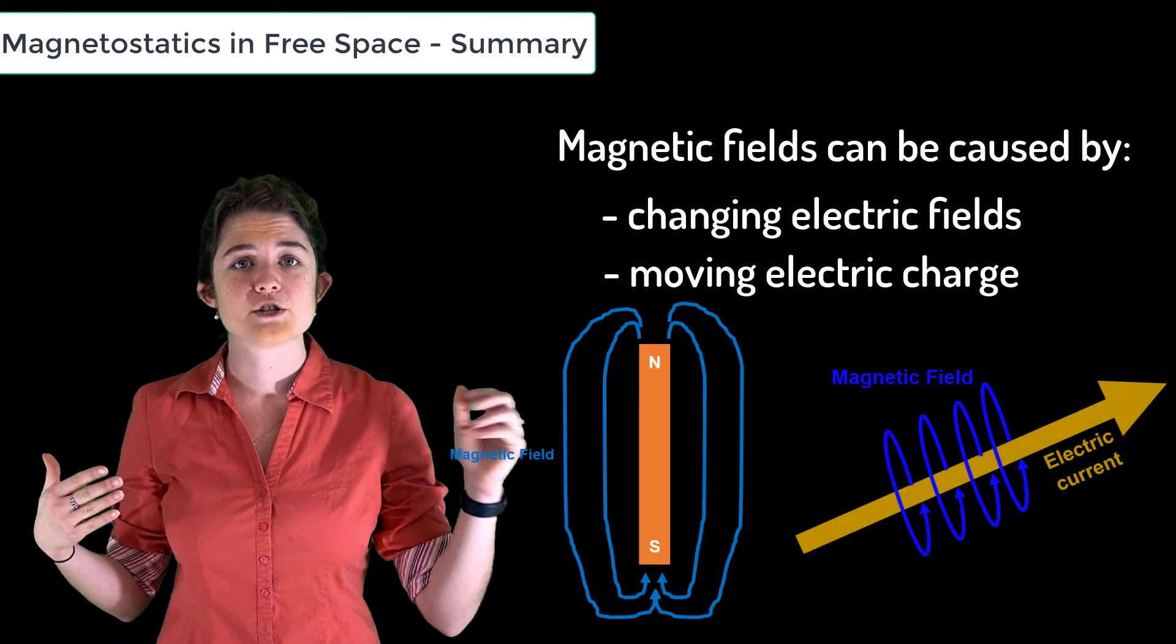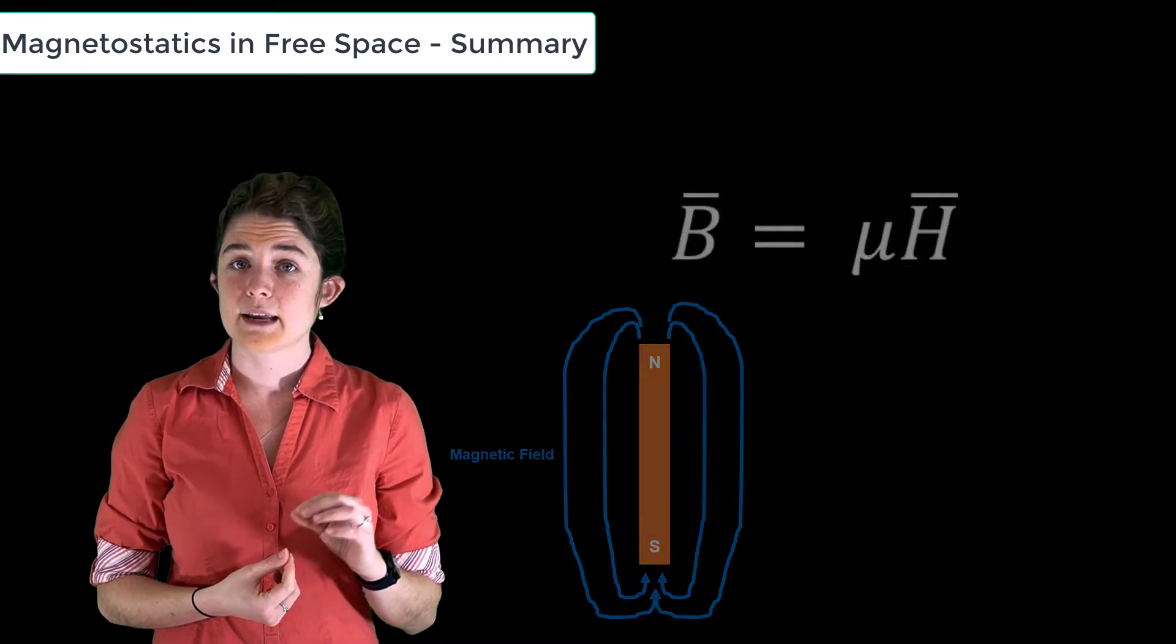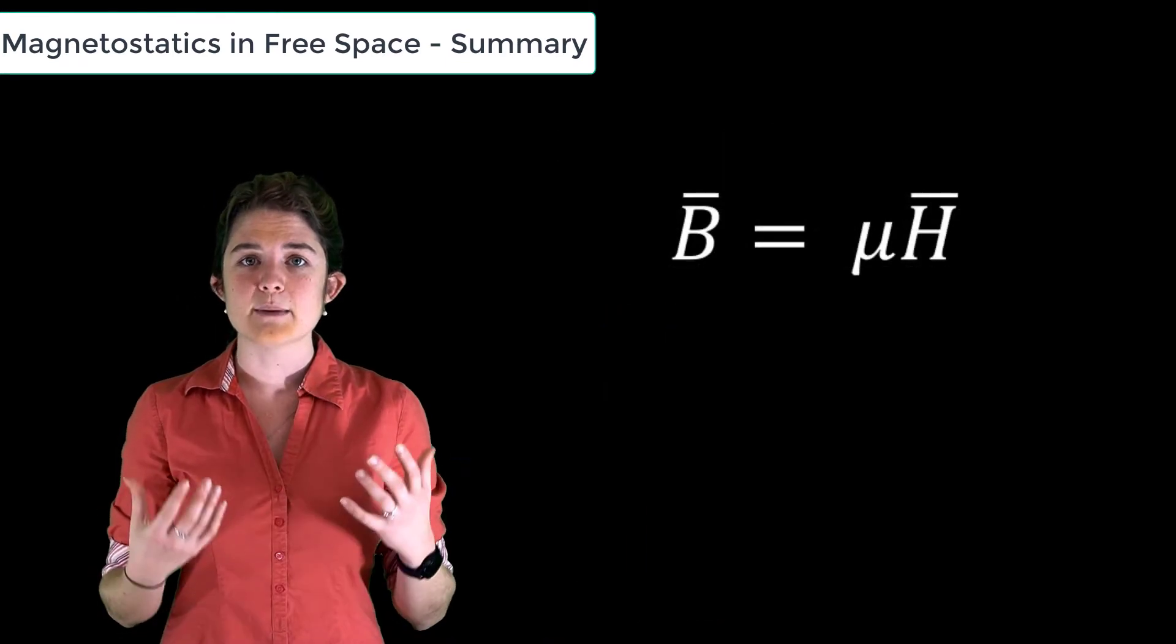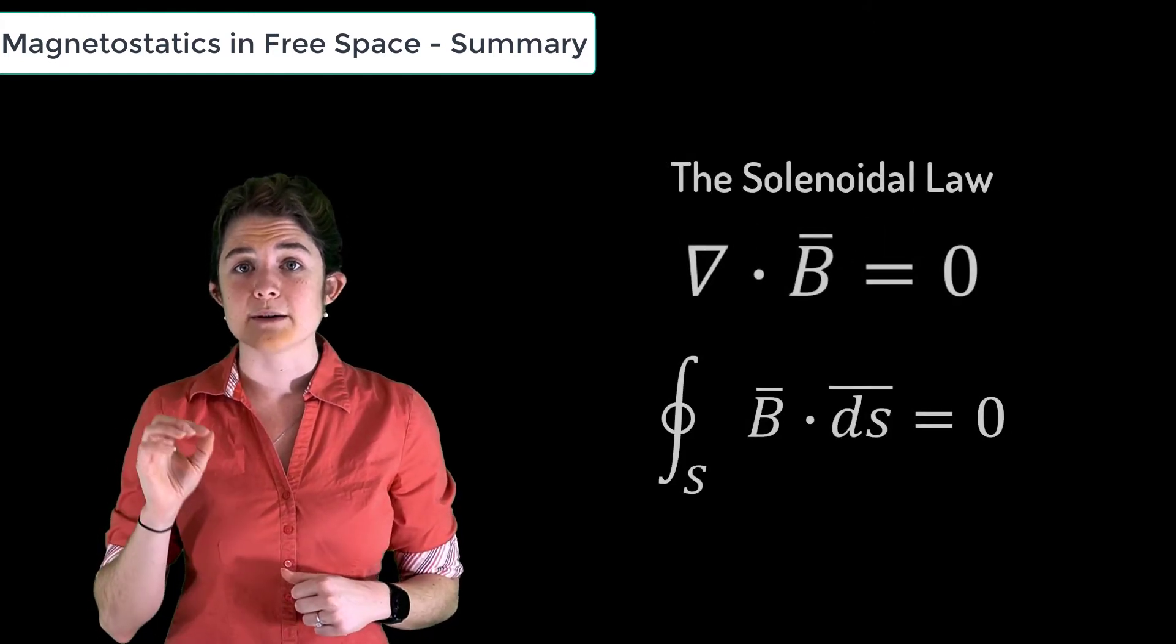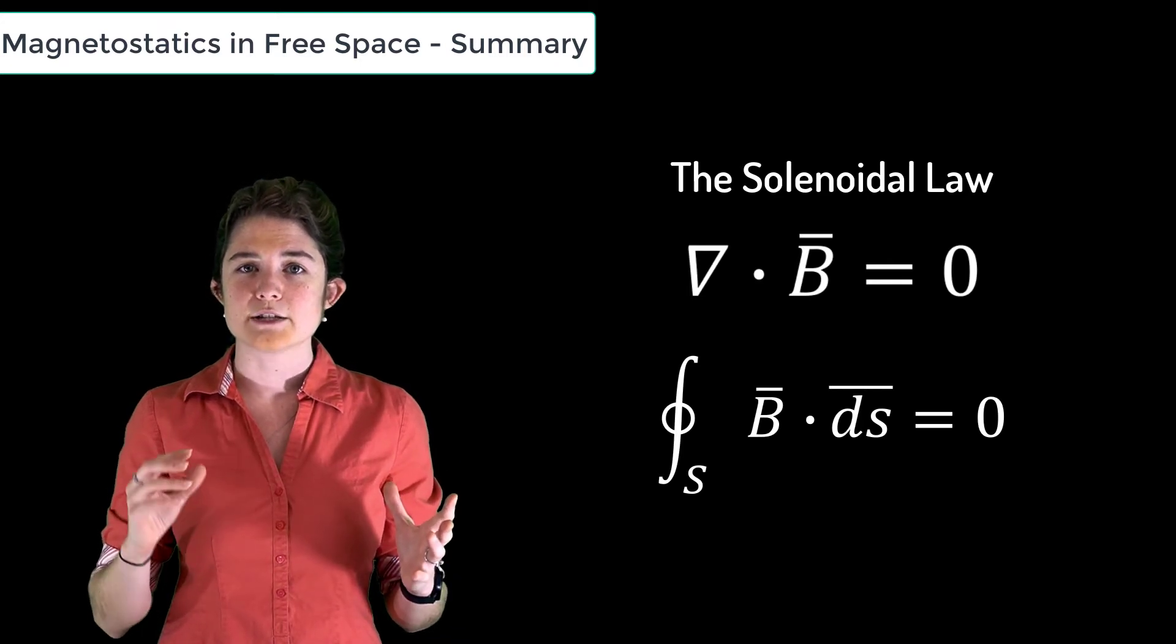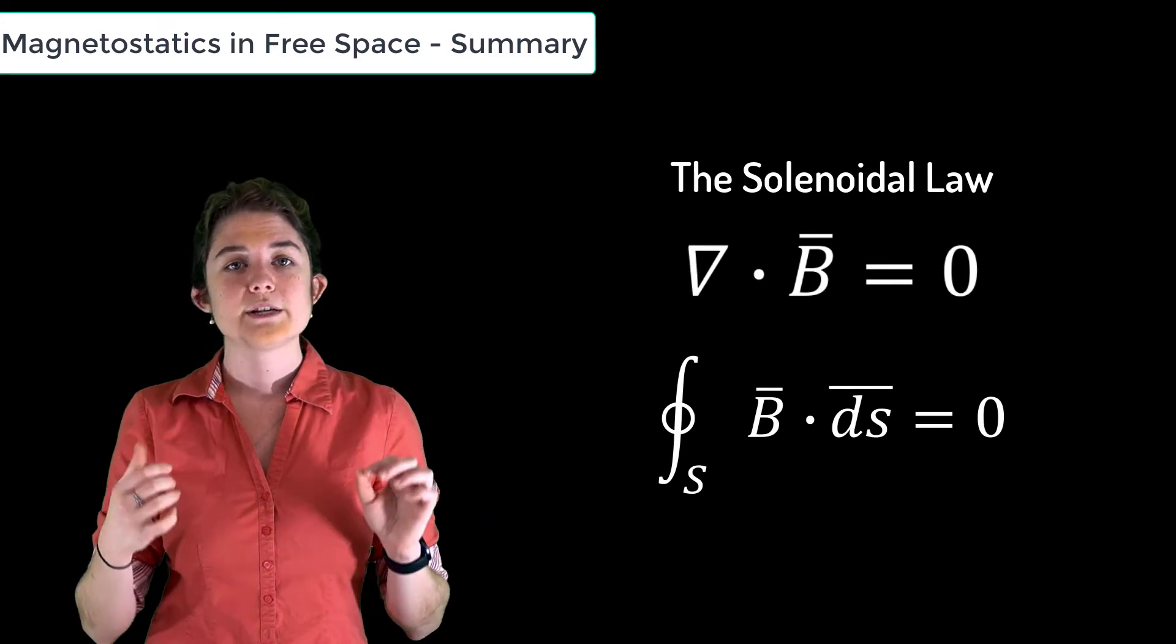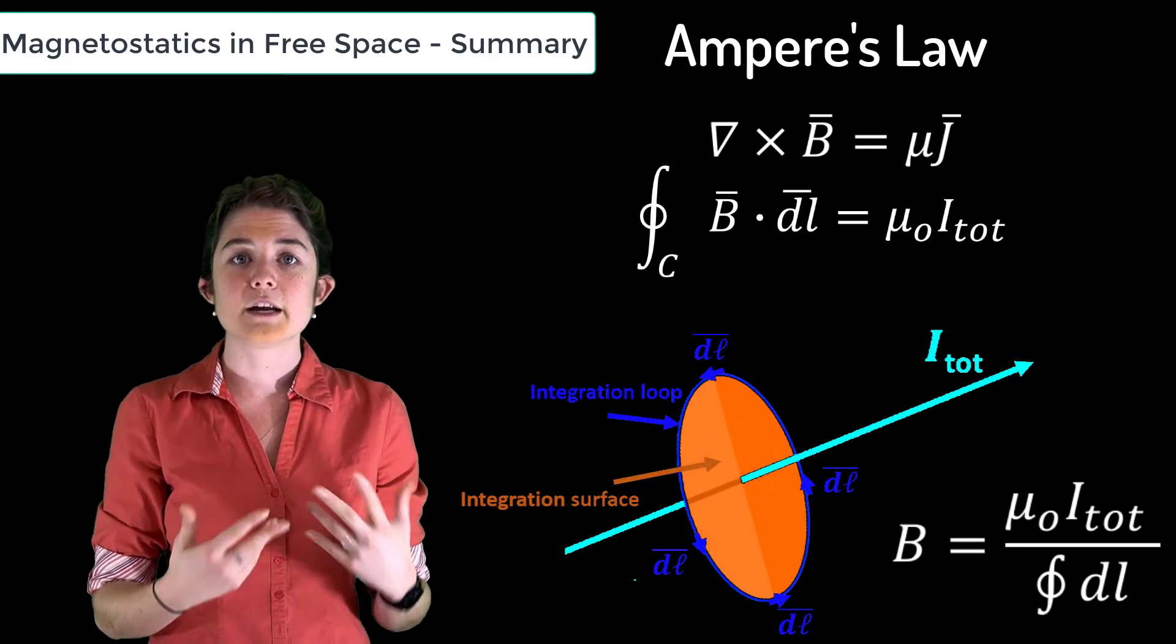We introduced magnetic flux density B and magnetic field H. We discussed the solenoidal law, which says that because of the lack of magnetic monopoles, all magnetic flux lines flow in circles. We talked about Ampere's law, which is especially useful when analyzing symmetric geometries.